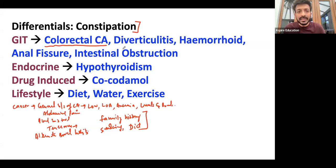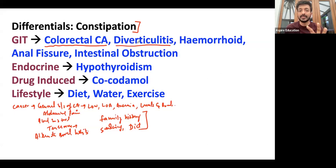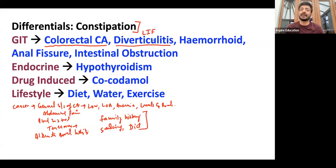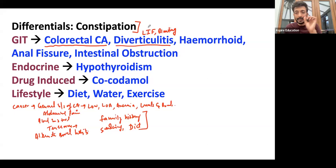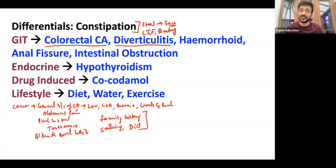Another differential for constipation is diverticulitis. In diverticulitis, the patient can have constipation and tummy pain, typically left iliac fossa pain. The patient might also say they have bloating. A very typical history is that the symptoms ease after passing stool or passing wind — the patient feels better. And if there is infection, the patient can have fever as well.